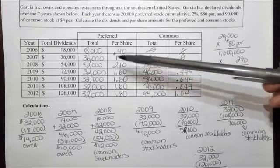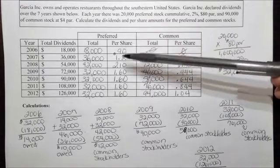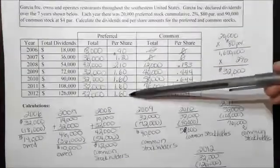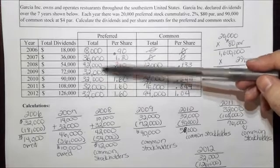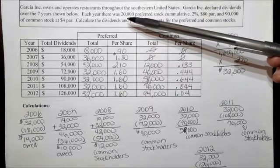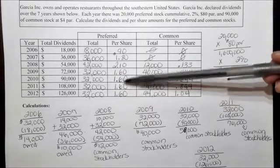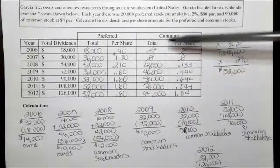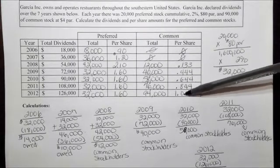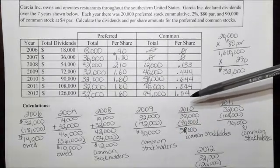This is how we determine how much goes out to the preferred stockholders, what goes out to the common stockholders, and how we determine the per share amount. Notice that the per share amount started off low for the preferred stockholders but maxed out at $1.60, because once all amounts are paid they stay the same — they have 20,000 preferred stock shares and are paid $32,000, which is $1.60 per share. The common stockholders fluctuated, but each year their amount got better and better, increasing more and more each year.